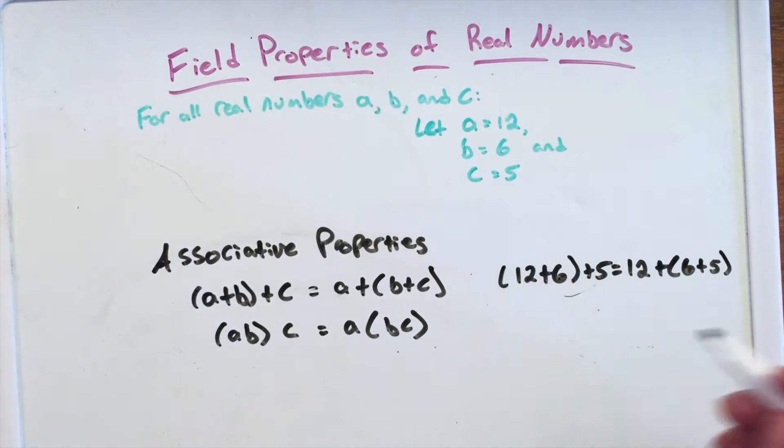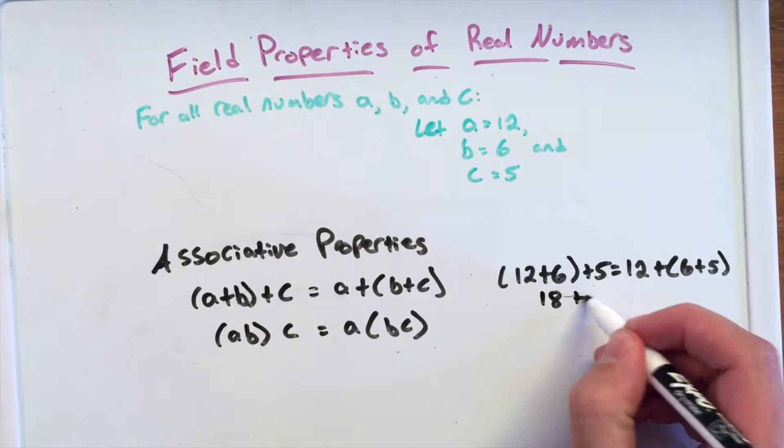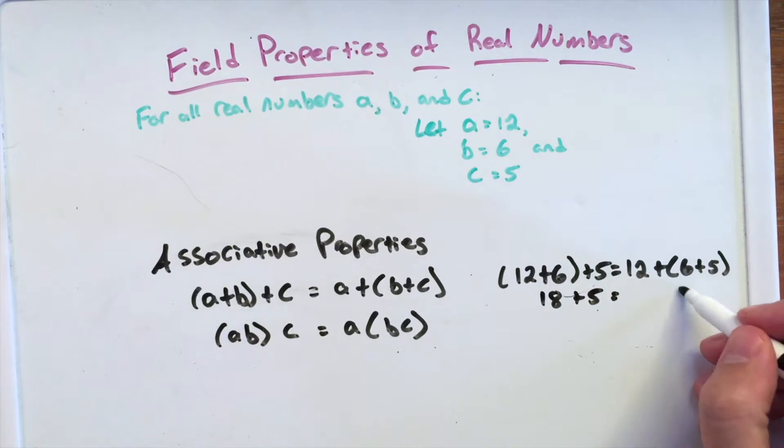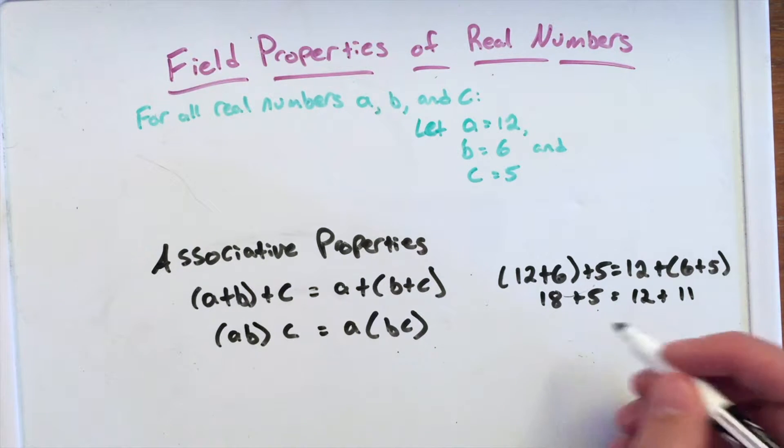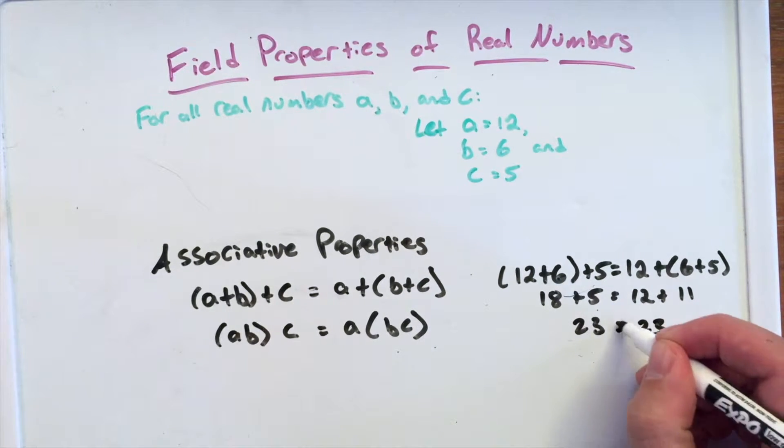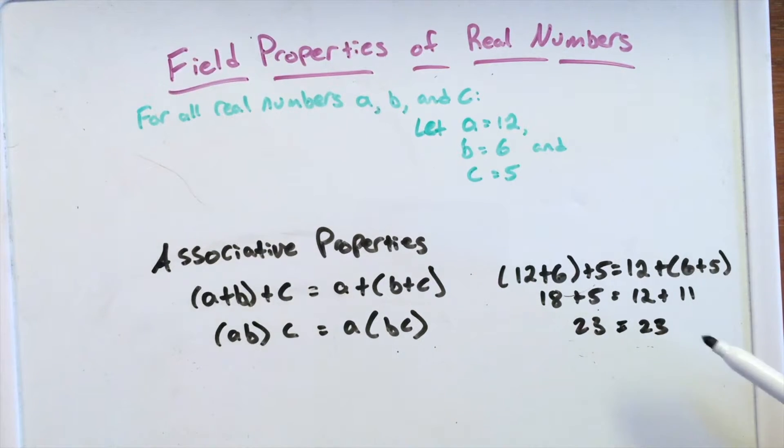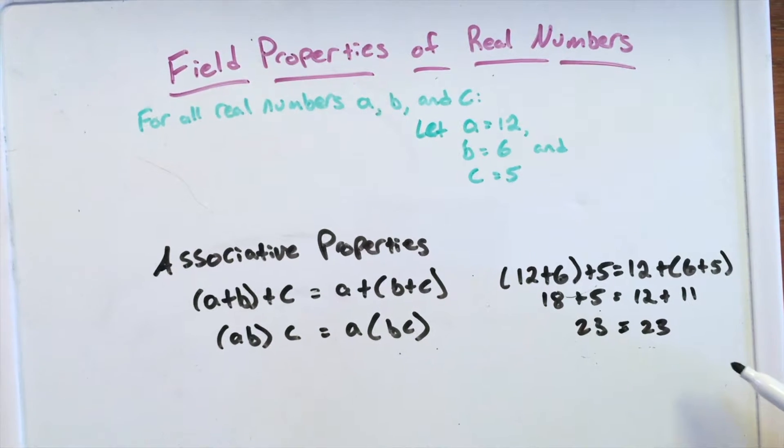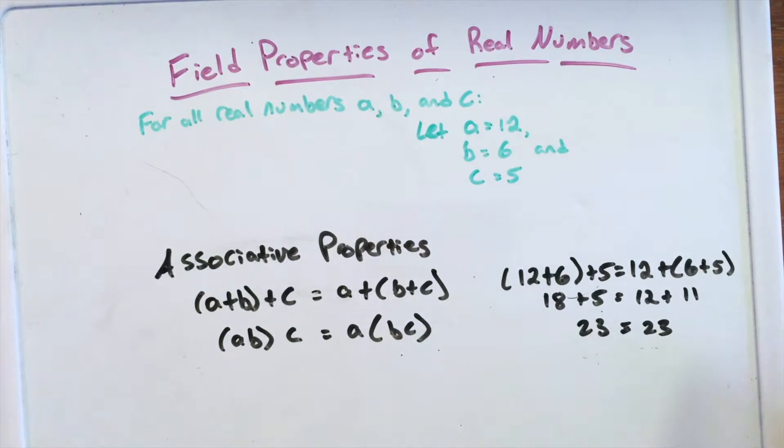We have already shown before that 12+6 is 18+5, and 6+5 is 11, we have plus 12. And then 18+5 gives us that 23. And again, 12+11 is 23. So what it's stating here really doesn't matter, they're going to be the same value. The same value here, equal on both sides.